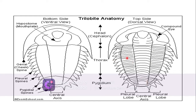The body is divided into three regions: number one, number two, and number three. The central region is called the central region, and the sides of the region are called pleural lobes. This is one pleural lobe — the lateral one — and this is another lateral one, also called a pleural lobe. So the body is divided into three regions.